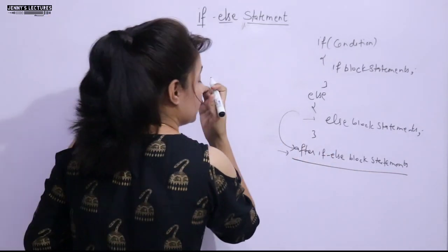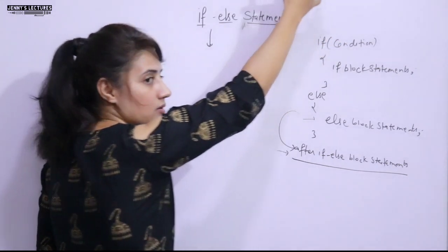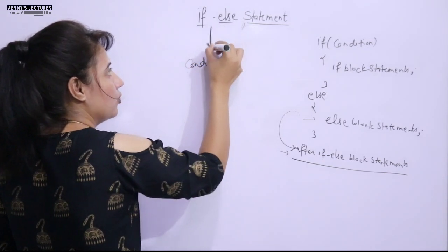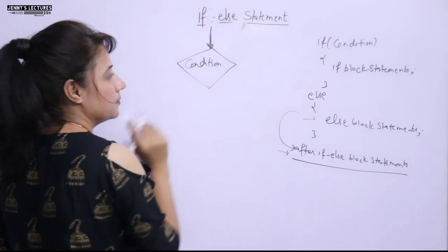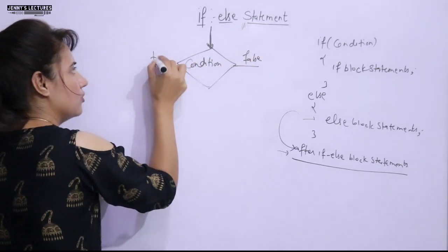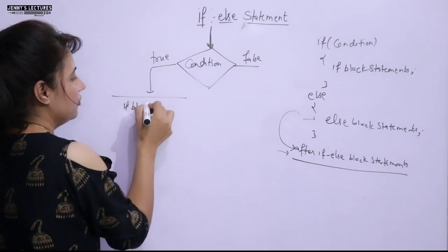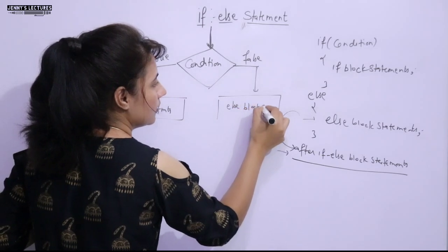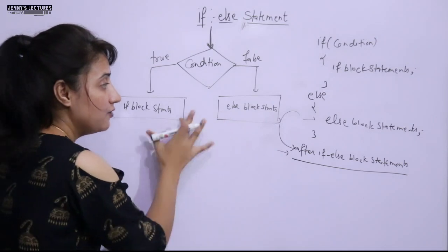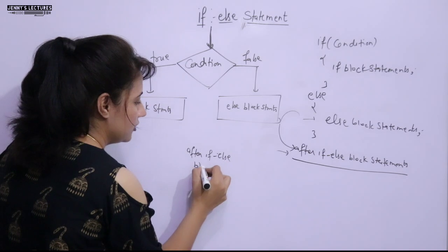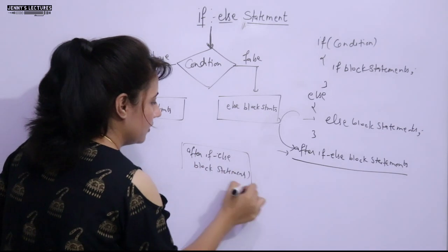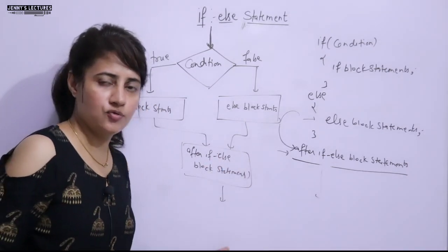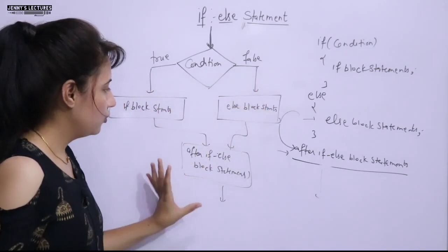Let me explain this with a flowchart. The program is executing statements, then we encounter a condition. Two cases: if true, the if block statements are executed; if false, the else block statements are executed. After either block, the after-if-else block statements are executed, and then the program exits.